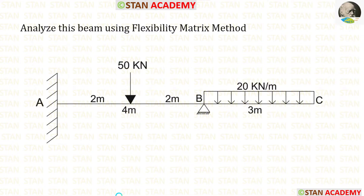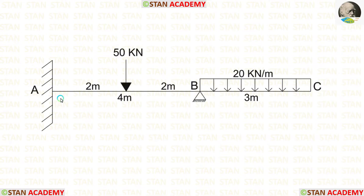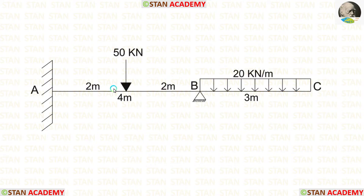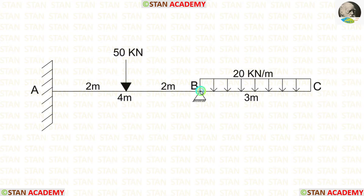Before analyzing, let us see the beam. In this beam, there is a span AB and an overhanging span BC. In the span AB, there is a point load of 50 kN acting at the center. In the overhanging span BC, there is a uniformly distributed load of 20 kN per meter.